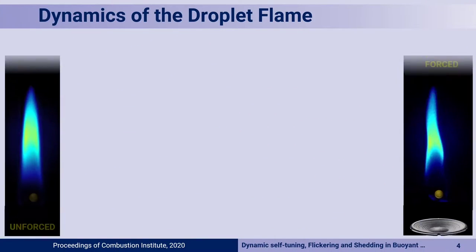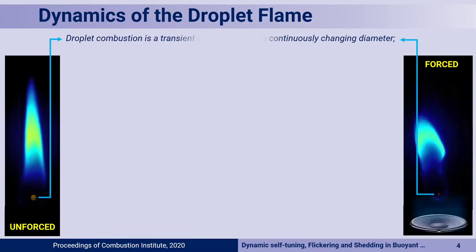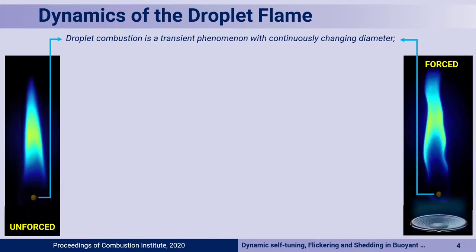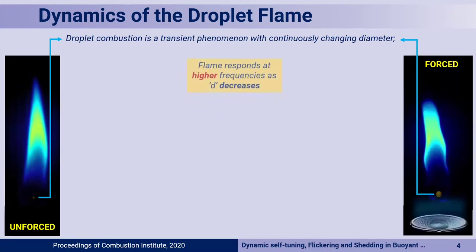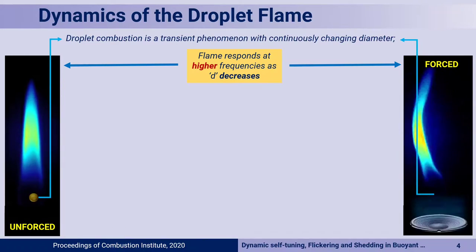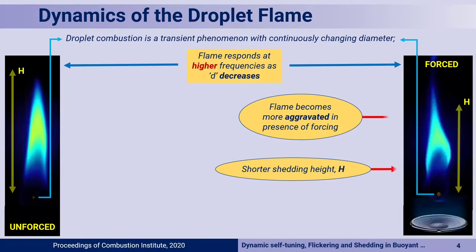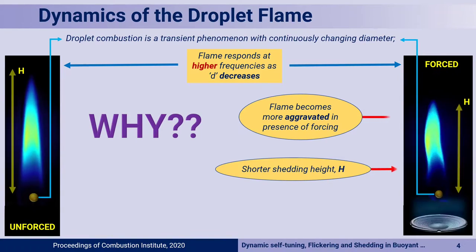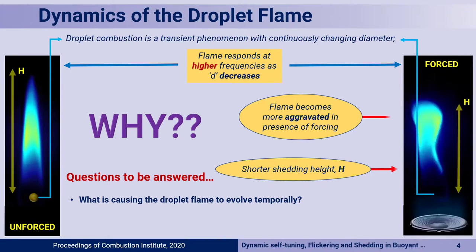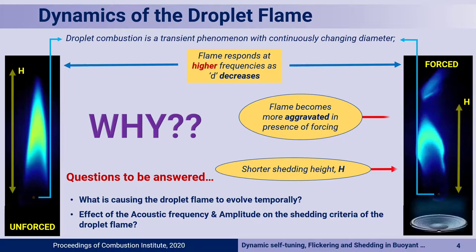Let us look at the pertinent questions. In the case of an unforced droplet diffusion buoyant flame, as the diameter of the droplet reduces, the flame slowly and steadily starts to show higher frequency response. This is present for both unforced as well as forced flames. However, when acoustics are introduced, the flame becomes more aggravated in the presence of forcing. Also, the flame shedding height at which the flame basically pinches off also reduces when you force the flame. We will address these questions in detail — why there is a temporal evolution in droplet flame frequencies, and what is the role of acoustic frequency and amplitude on the shedding criteria and this aggravated response.